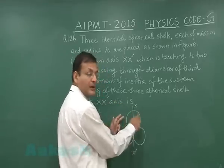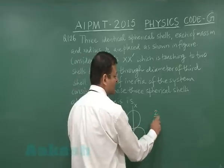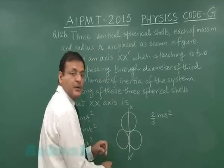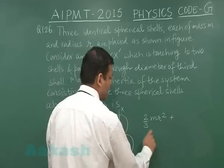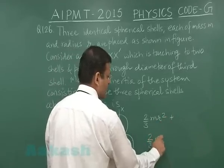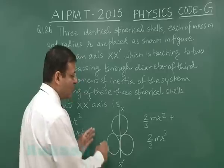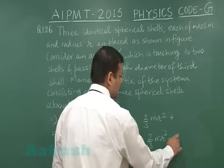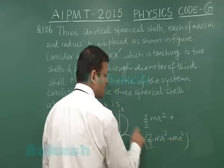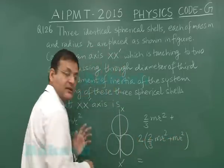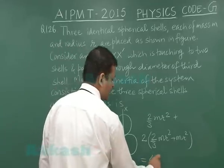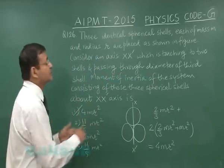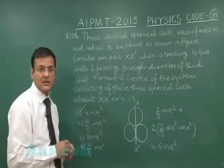So it is an additive quantity. If you talk about the moment of inertia of the upper one, it is simply 2 by 3 m r squared. And if you talk about this one, so this is based on parallel axis theorem: 2 by 3 m r squared through the diameter plus m r squared. And you have two such spheres so multiplied by two, that will make it in total 4 m r squared. So this will be the total moment of inertia of this entire arrangement. So I will be marking answer 1 for this question, question number 126.